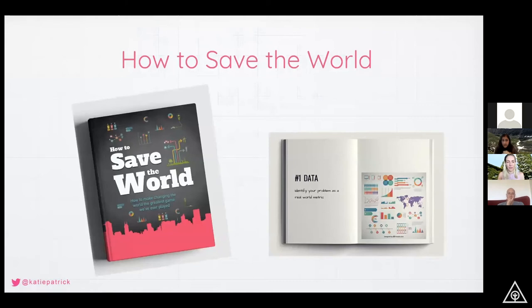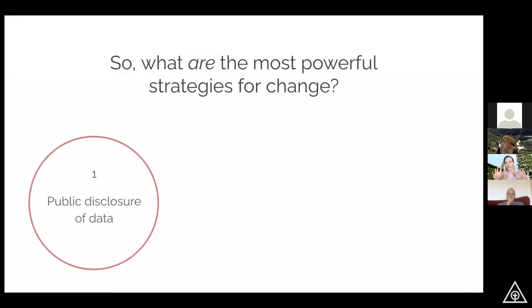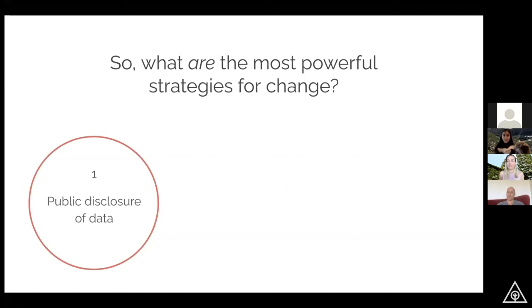My book is about how we can get over this value-action gap to get people to do stuff. To simplify it into three things: Number one is the public disclosure of data. Can we put the CO2 the electricity grid is putting out on billboard screens so everybody can see it? When we look at urban heat islands, nobody knows what their urban heat island is. That's why we're here today — just get the data, make it public, make it visible. This has been proven time and time again to be a powerful way of creating change.